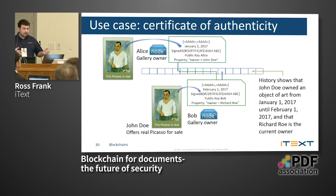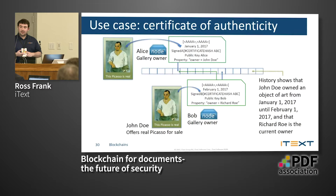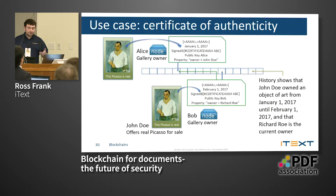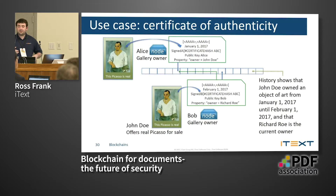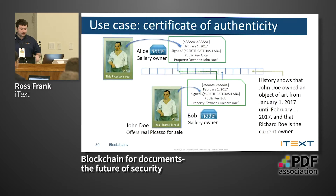When John Doe actually sells the real painting, the key and hashes match. The owner becomes Richard Rowe, and the history shows that John Doe owned the art from January 1st until February 1st. This creates a history of the document, allowing you to track where files have gone and where they can go.